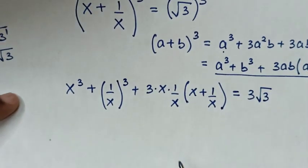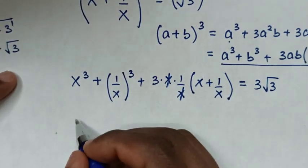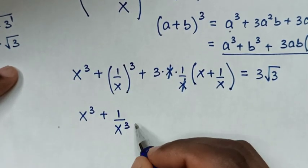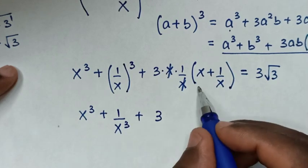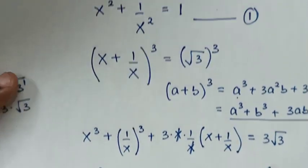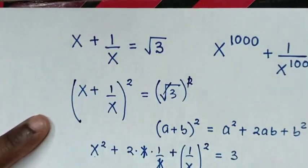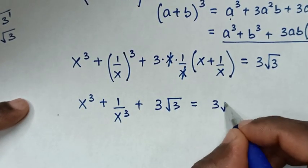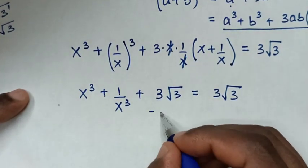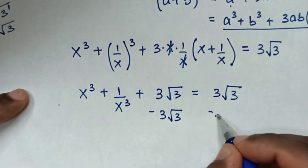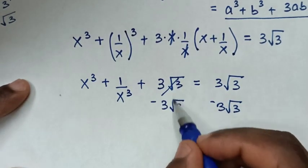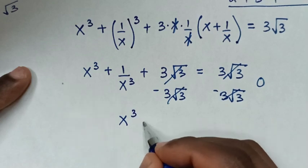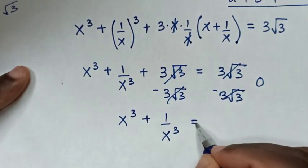Then the x cancels with this x, so it will be x cubed plus 1 over x cubed, plus 3. Then, times (x plus 1 over x): from our original equation, x plus 1 over x equals square root of 3, so we multiply by square root of 3, equals 3 square root of 3. We subtract 3 square root of 3 from both sides, so this minus this is 0 and this minus this is 0. So our equation gives us x cubed plus 1 over x cubed equals 0.